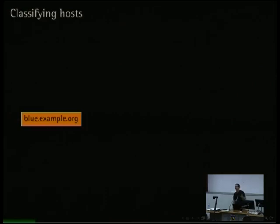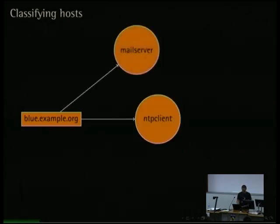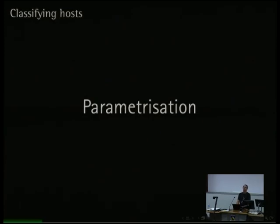The opposite of targeting nodes is the classification of nodes. Those who have interacted with CFEngine will know what this is about. Instead of targeting my mail server role at certain machines fulfilling criteria in the cloud, I have a node called 'blue' and I classify it as being a mail server, an NTP client, and as being hosted in Zurich. When dealing with system configuration and automation tools like Puppet or Chef, parameterization becomes key. You want your configuration code to apply to all infrastructures and parameterize all changing parts specific to your infrastructure.